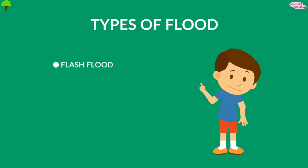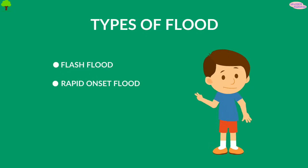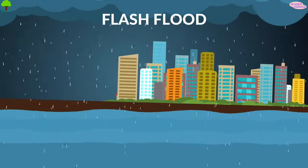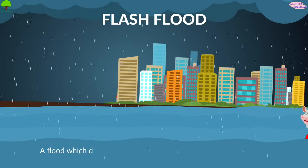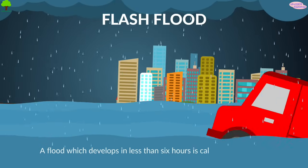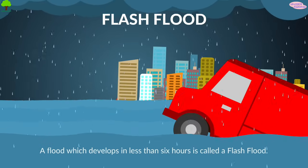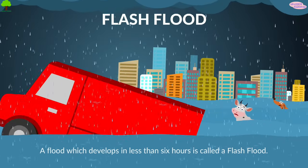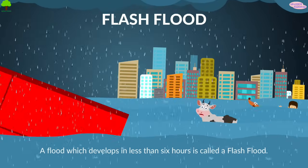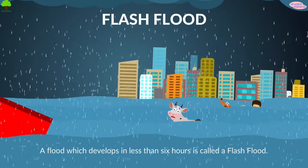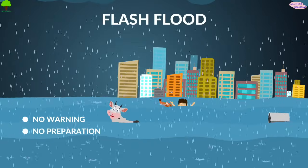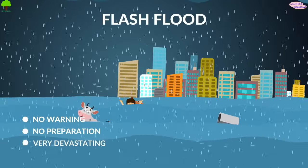Flash floods, rapid onset floods, slow onset floods, and storm surge flooding. A flood which develops in less than six hours is called a flash flood. They can occur almost everywhere, but most commonly in low-altitude areas with poor drainage systems. There's mostly no warning and no preparation, so the impact can be devastating.